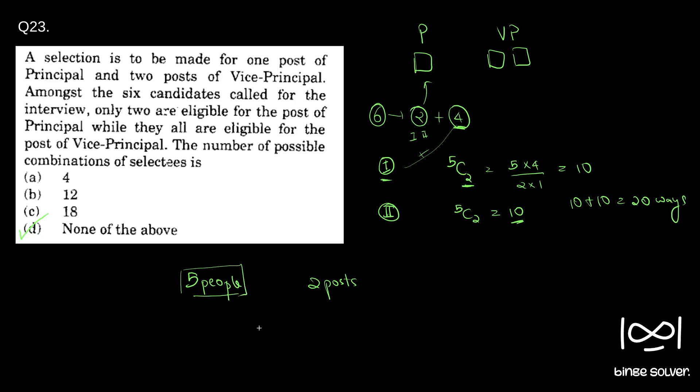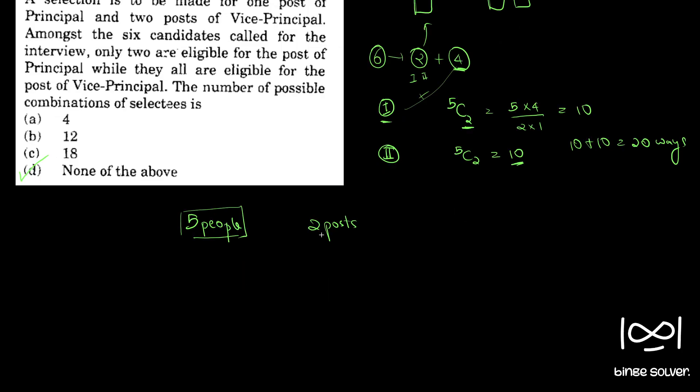How will we select 2 people from among the 5 people? Their order is irrelevant. We have to select 2 people from these 5 people. That is how 5C2 comes.